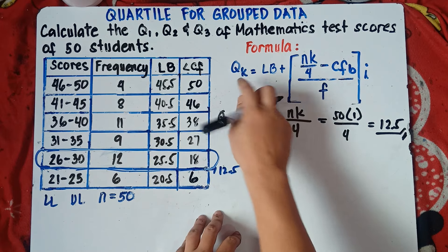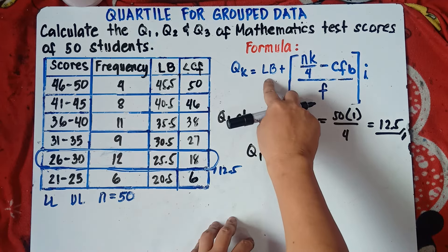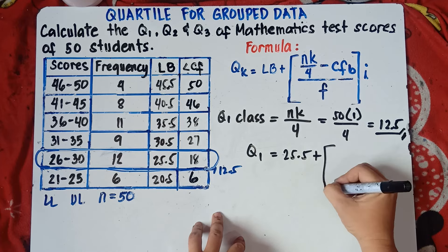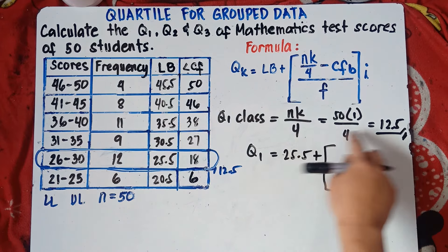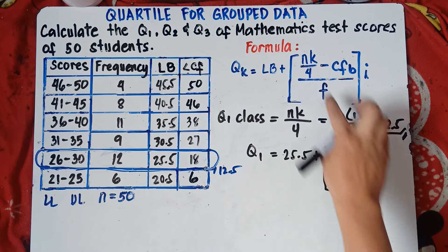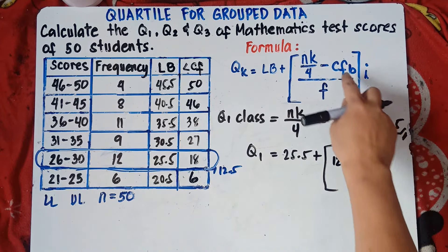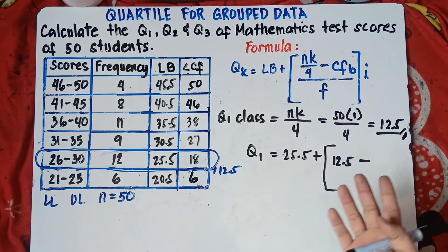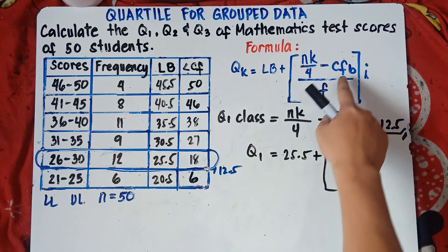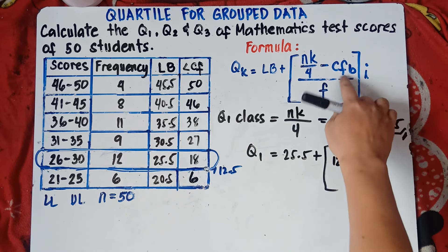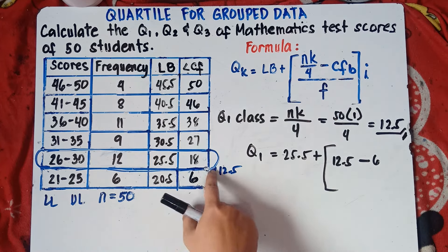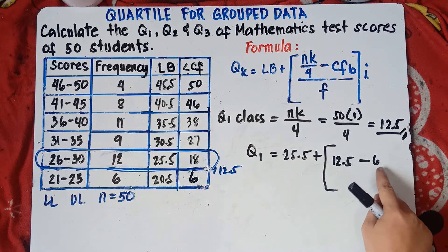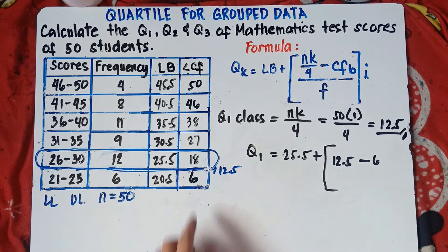Now let's use the formula. Q1 equals LB, which is 25.5, plus bracket NK over 4 — that is 12.5 — minus CFB. CFB means cumulative frequency before the quartile class, which is the previous row. Our quartile class has cumulative frequency 18, so CFB is 6. So this becomes 25.5 plus bracket 12.5 minus 6, over F which is 12, times I.